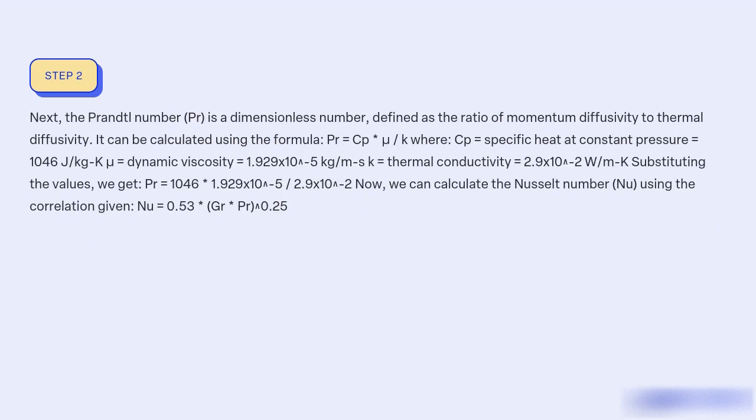Next, the Prandtl number (Pr) is a dimensionless number defined as the ratio of momentum diffusivity to thermal diffusivity. It can be calculated using the formula Pr = Cp × μ / k, where: